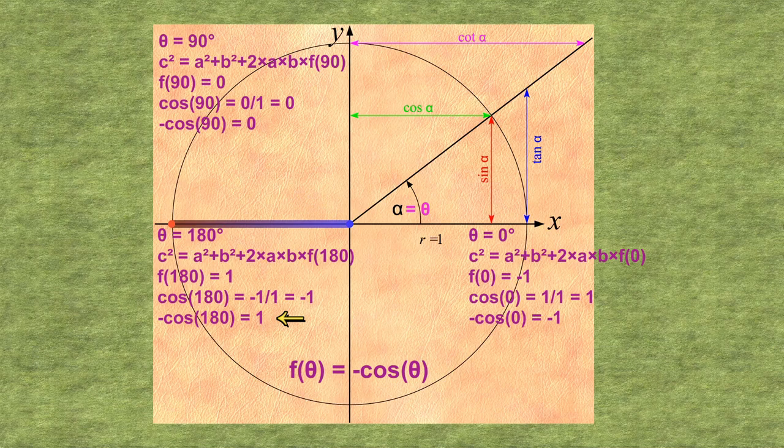So, the function minus cosine of the angle provides us with solutions for our three special cases. If we replace our previously unknown function with minus cosine, we get the formula for the cosine rule.